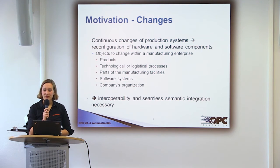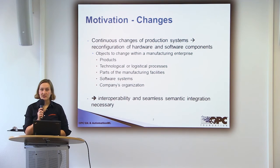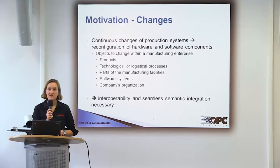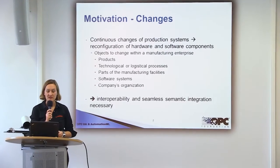The motivation is continuous changes in production systems which cause the reconfiguration of hardware and software components. The objects which have to be changed within a manufacturing enterprise are the products, but also technological or logistical processes, parts of the manufacturing facilities, and the software systems and the company's organization.